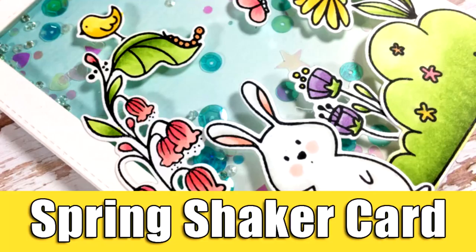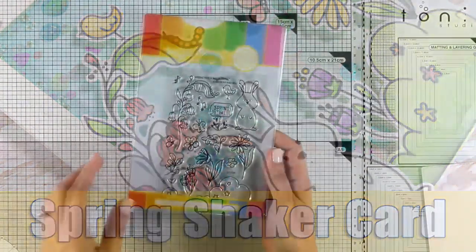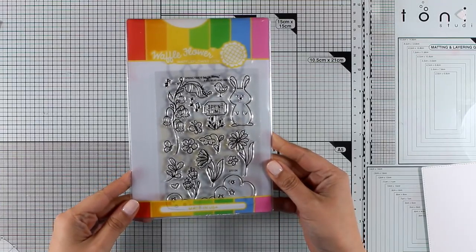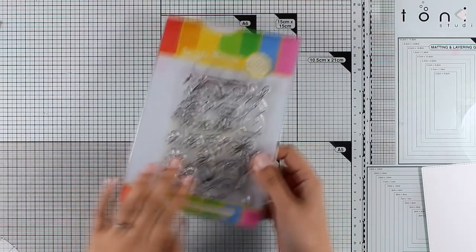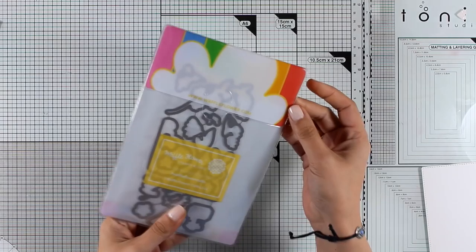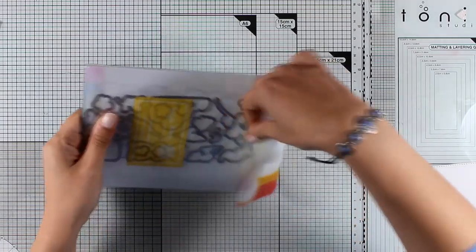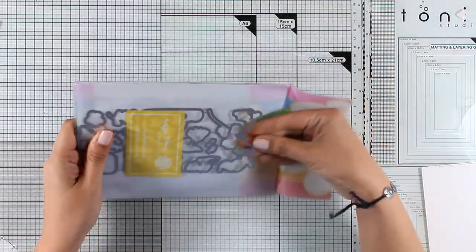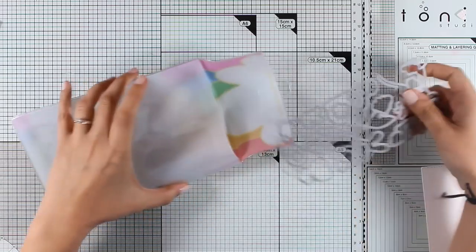Hi, it's Vicky here and welcome back. Today I'm going to create a shaker card which is perfect for spring. I'm going to use this Waffle Flower stamp set called Springtime. There are also matching dies for this stamp set, and if you get both of them as a combo, they send them in this very convenient envelope.